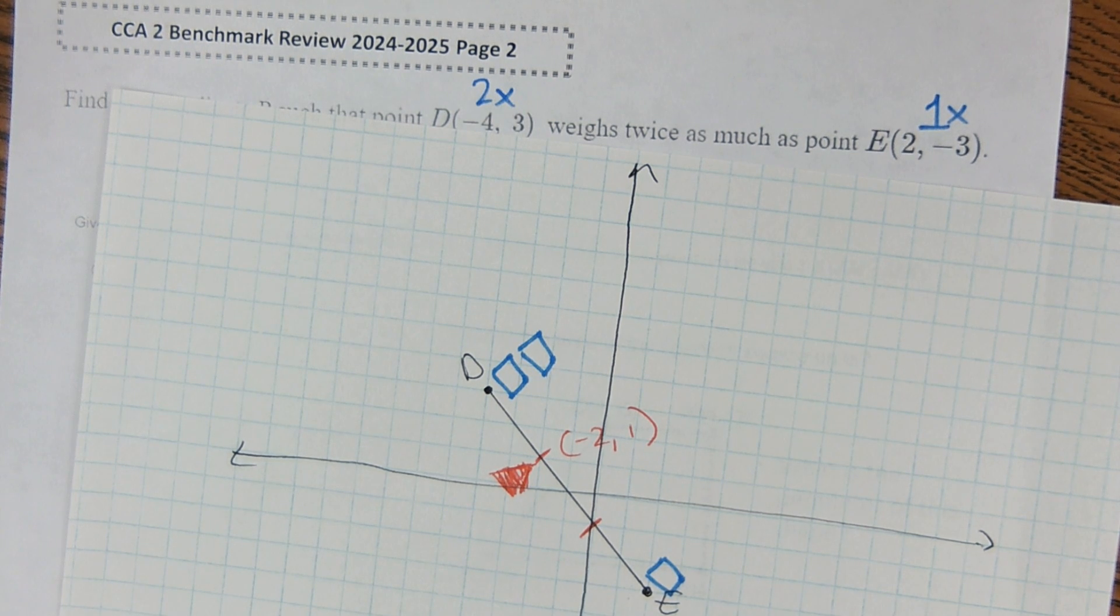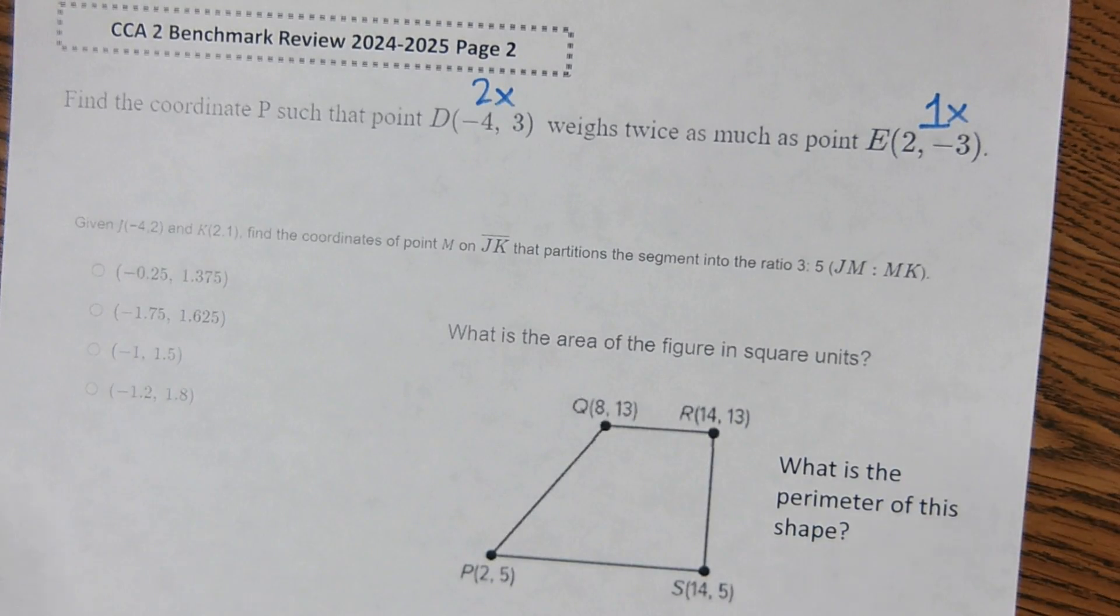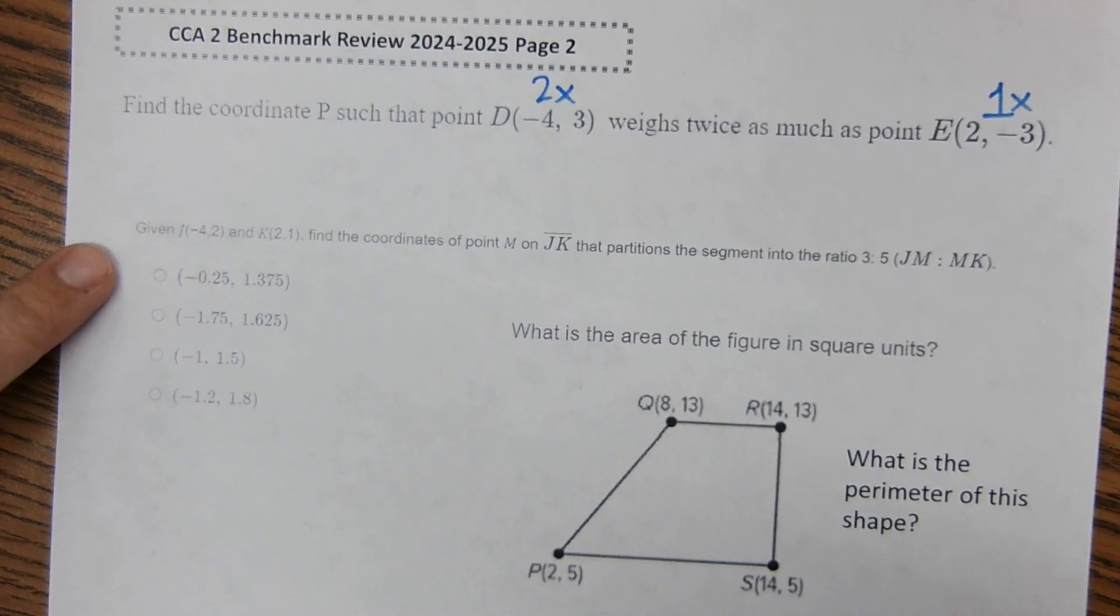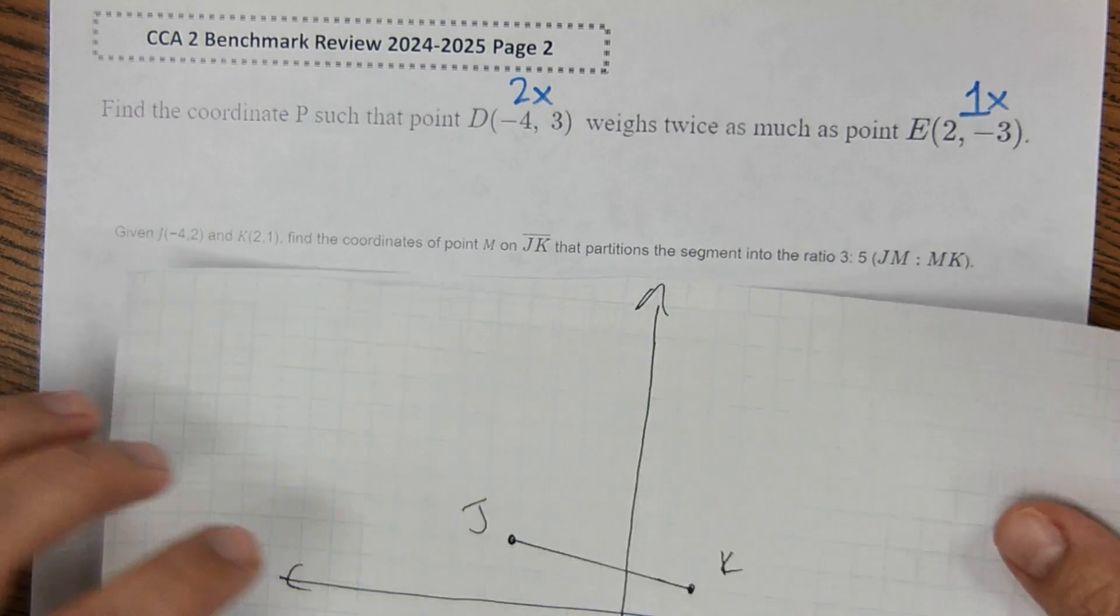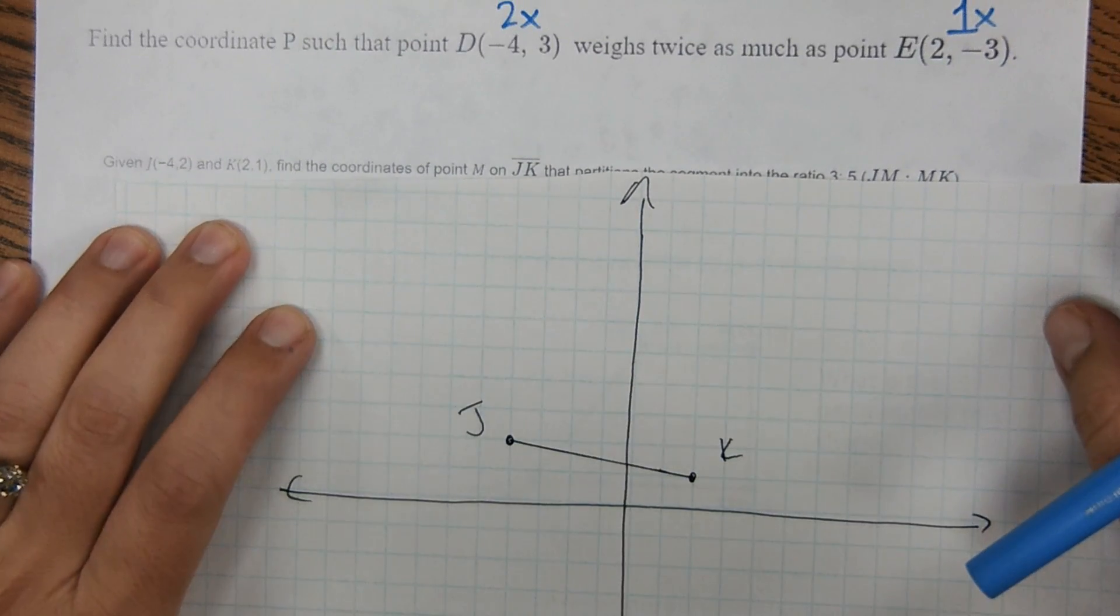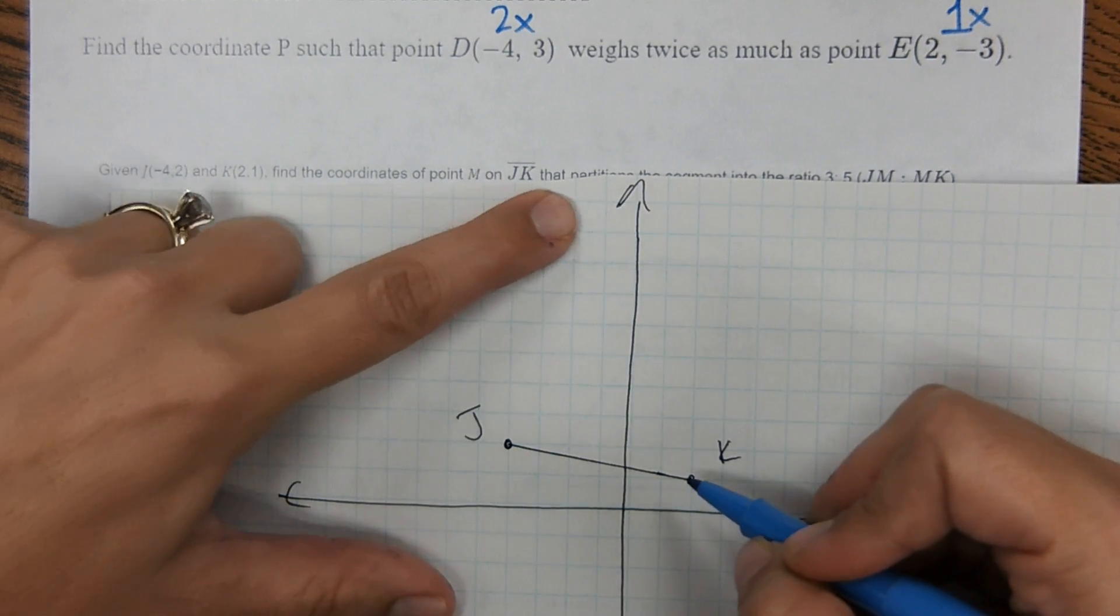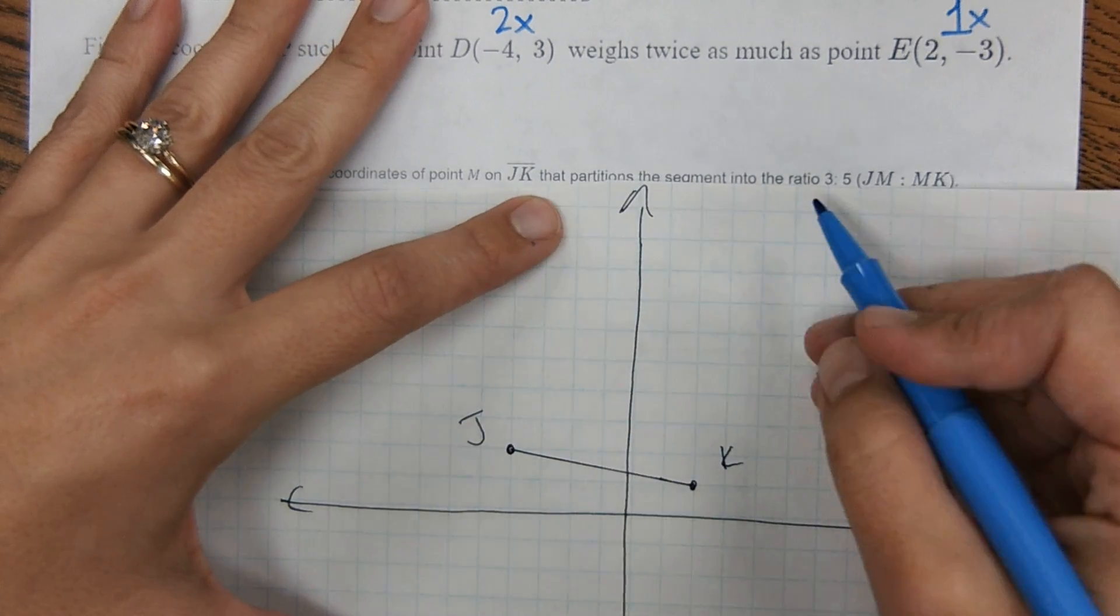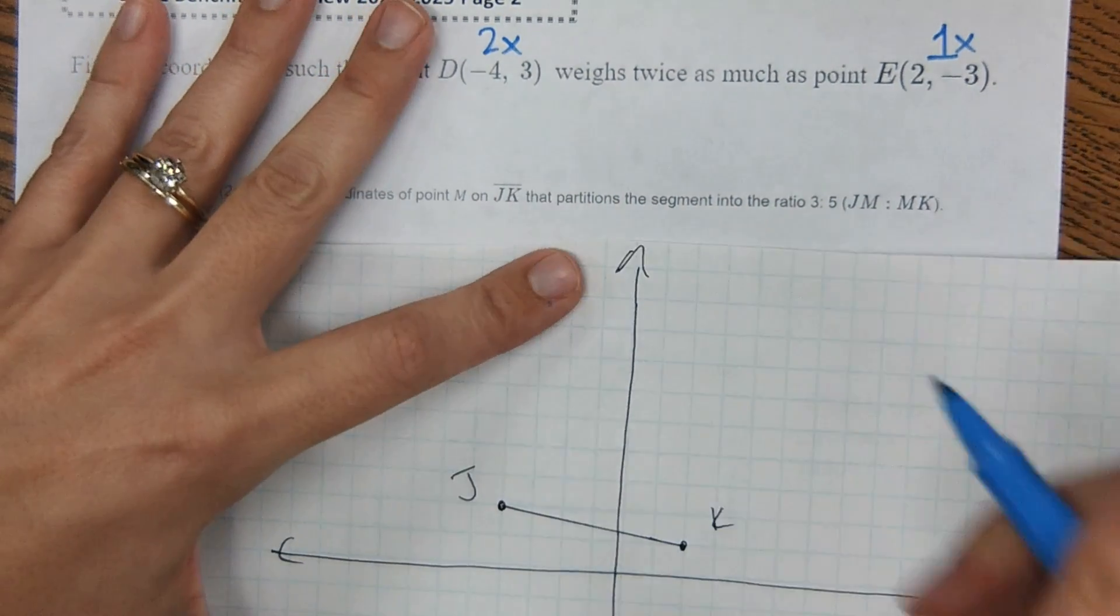Okay. The next one is ratios. This one here, again, you could graph it out or whatnot. It says you have J at negative 4, 2 and K at 2, 1 right here. Find the coordinates of M on JK that partition the segment into a 3 to 5 ratio. So 3 to 5 would be 8 parts total.